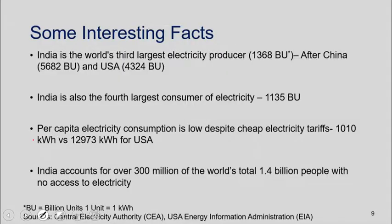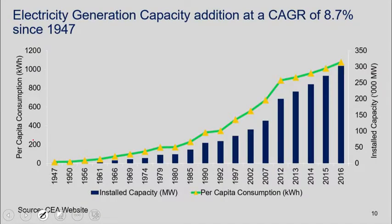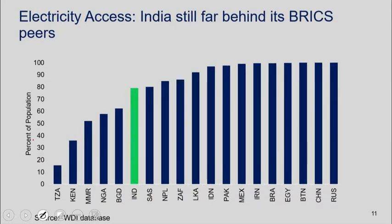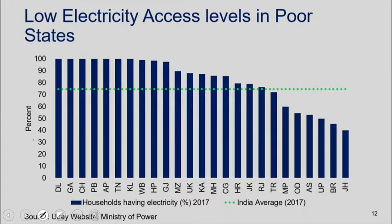Some interesting facts about the power sector: India is the world's largest electricity producer and the fourth largest consumer. Per capita consumption is still very low — about 1,000 kilowatt-hours, compared to about 13 times that in the US. Despite having cheap tariffs, of course out of the 1.4 billion people with no access to power, India accounts for 30 million. But as I said, in the last three years we've had very strong additions to capacity and access — the percentage of population with access to power.